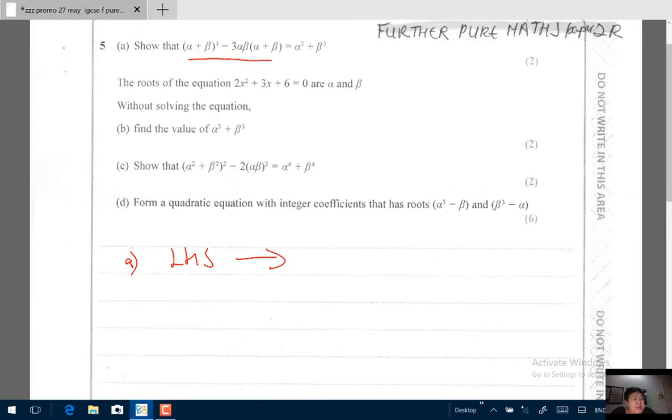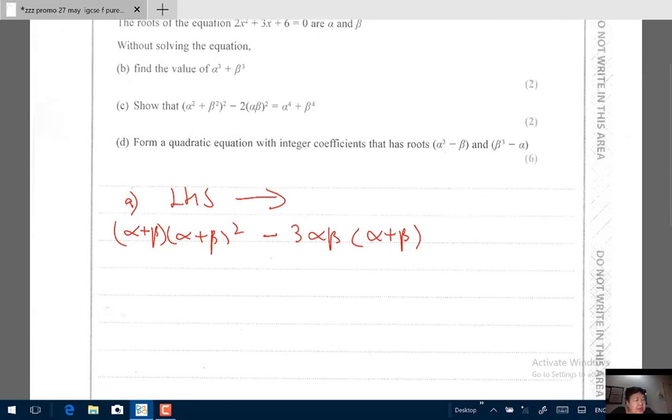Let's take that. So basically a simple expansion: (α+β)³ means (α+β)(α+β)² minus 3αβ(α+β). Now if you're moving from left hand side to the right hand side you can't write left hand side equals right hand side, that will be redundant. So you take a position - I'm moving from left hand side.